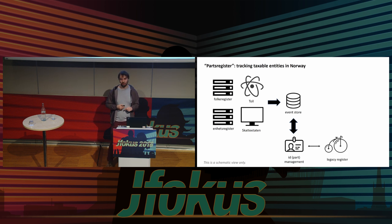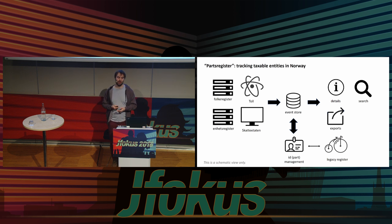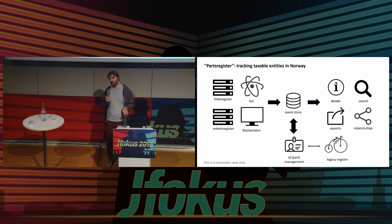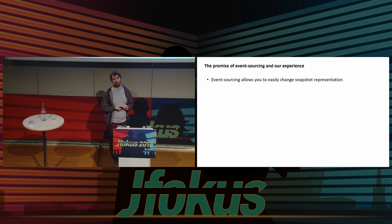We synchronize things to the legacy register which is still online. One big advantage we saw in event sourcing was that after the system had been running for weeks and months, we could constantly publish new services that would just reread all the events that had come in and reprocess them to go online when ready. Now we have a bunch of services online — we can look up stuff, search for people and companies, look into relationships published in a graph database. This all sounds really great, and it did for us, but over the years we discovered a few deficiencies as well.